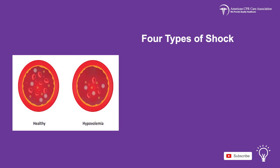There are four types of shock that occur in children which we will look at more in depth, and these are hypovolemic shock, distributive shock, cardiogenic shock, and obstructive shock.